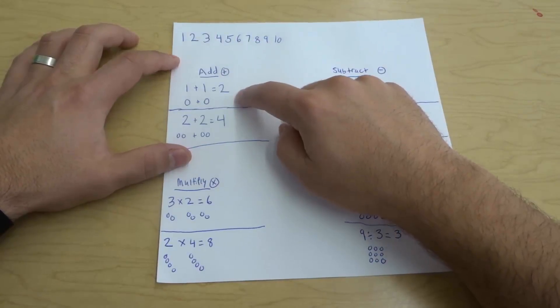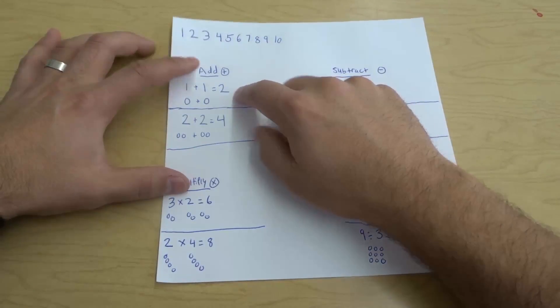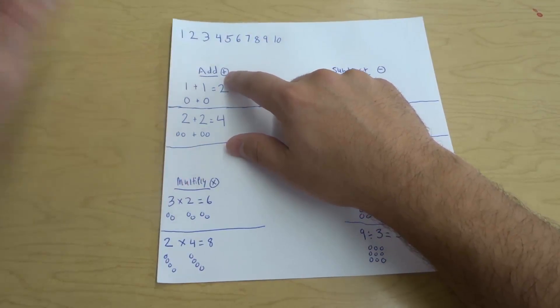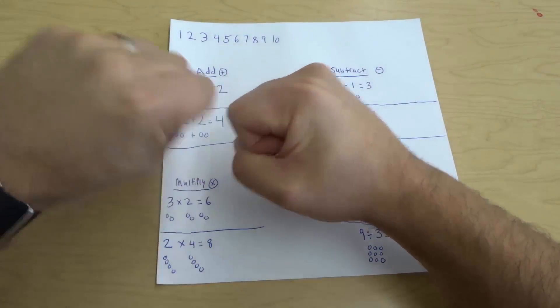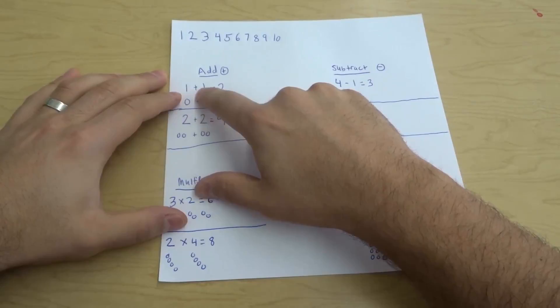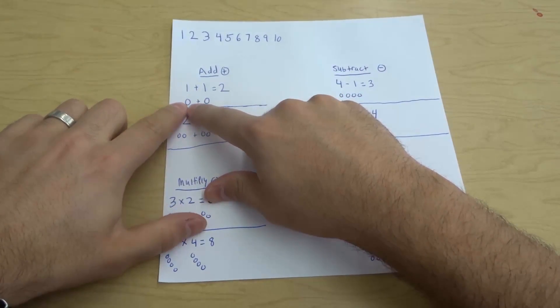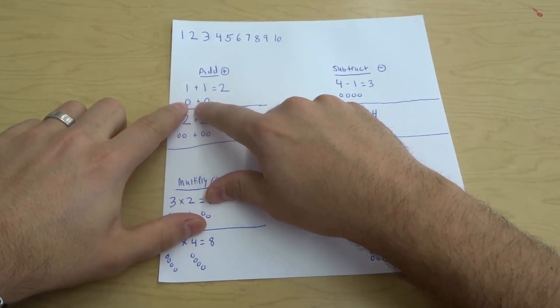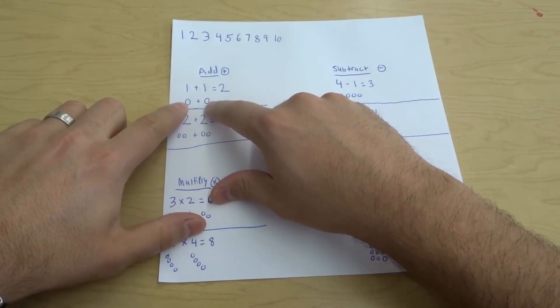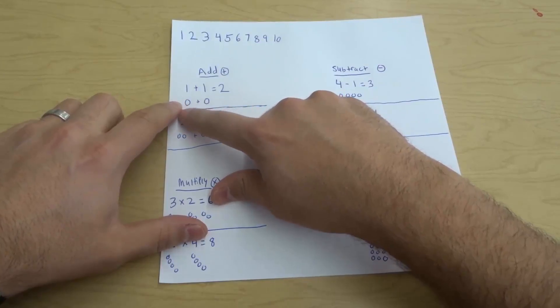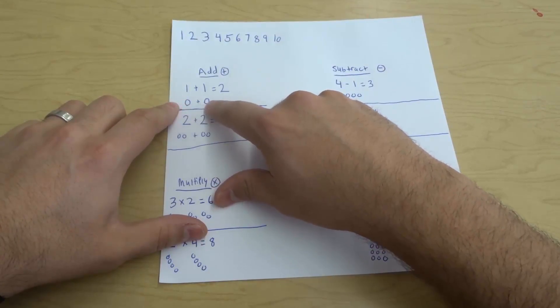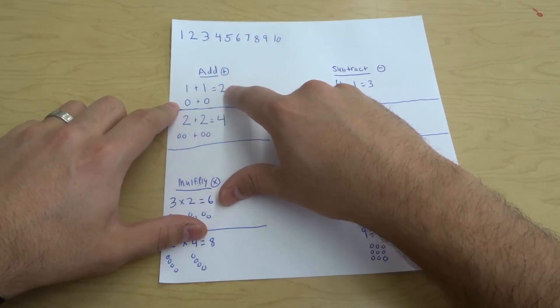Now the first math skill that I want to talk about is adding. This little symbol right here is a symbol for adding. When you add things together, you're bringing them together. So if I have 1 plus 1, you can see I have 1 over here, and I'm bringing it together with the other 1 over here. There's 1 circle here and 1 circle here. Now if we bring them together, we just count them: 1, 2. So the answer for 1 plus 1 is 2.